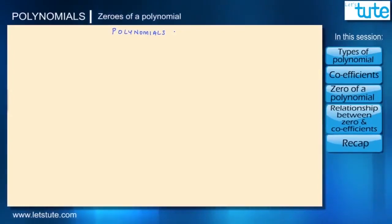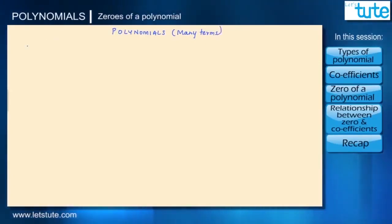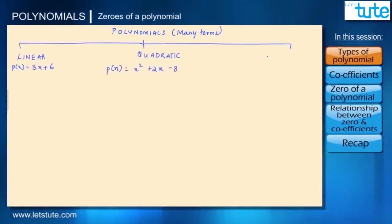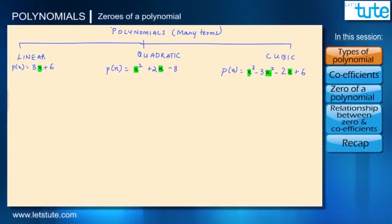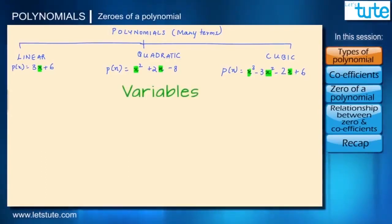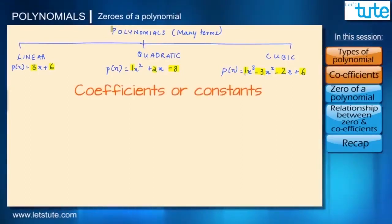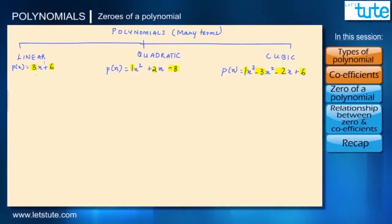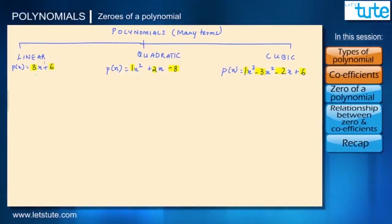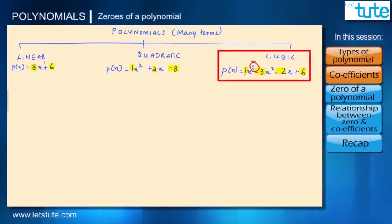Hello friends, today we're talking about polynomials. The word 'polynomials' means many terms. We know they are classified into linear, quadratic, cubic, and so on. The letters we see have unknown values and are called variables. Here we have just one variable, that is X. The numbers we see before the variables are called coefficients or constants. The highest power for 3x plus 6 is 1, therefore it is a linear polynomial. The highest power here is 2, therefore it is a quadratic polynomial.